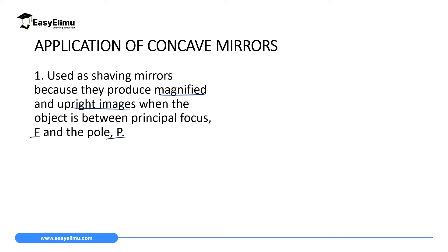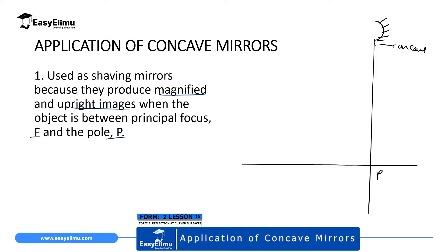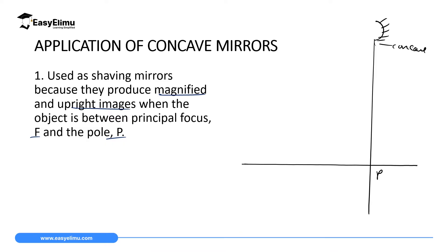To draw a representation of a concave mirror as a shaving mirror, I draw a horizontal line representing the principal axis, then a vertical line representing the mirror. This is a concave mirror and this is the pole. From the pole we have the focal length, which is equal to half the radius of curvature. At the radius of curvature we have the center of curvature.